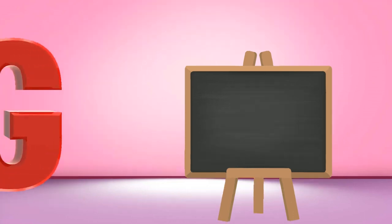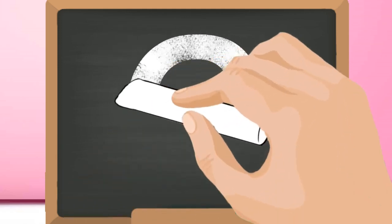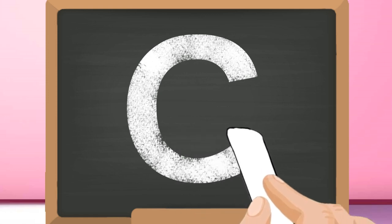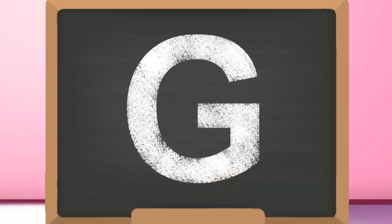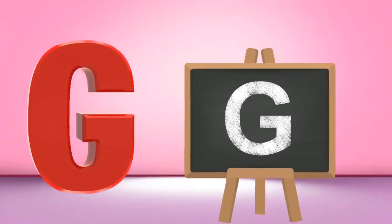G, capital G. Start from the top and draw a curve touching the bottom. Then till the middle, drop it with a slanting line. Then draw a standing line from the middle. Capital G.